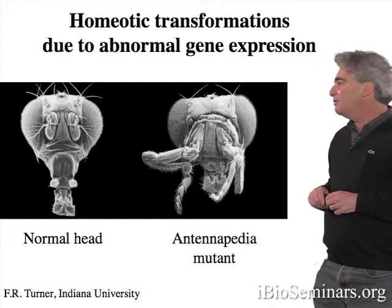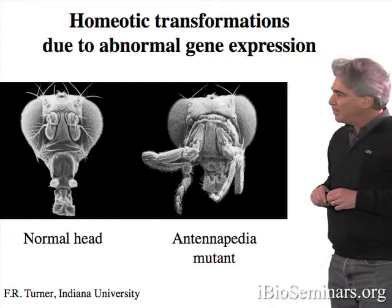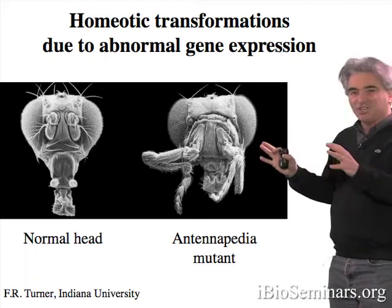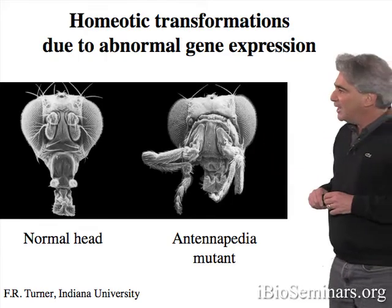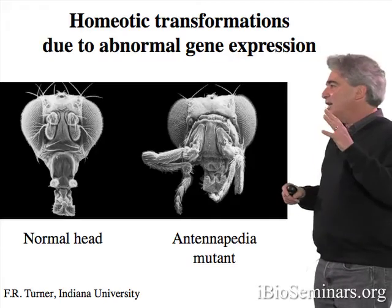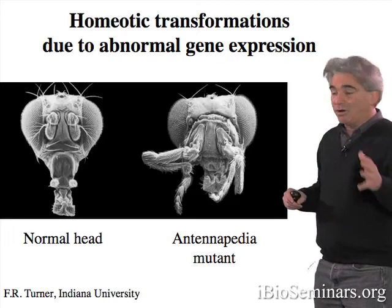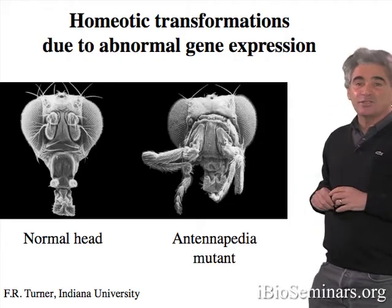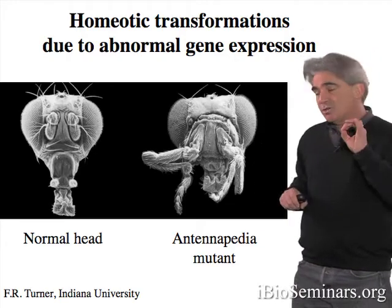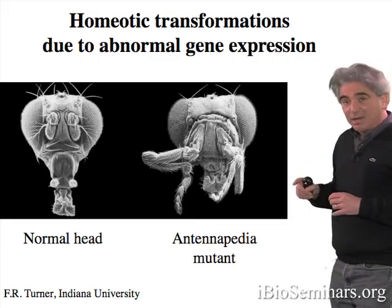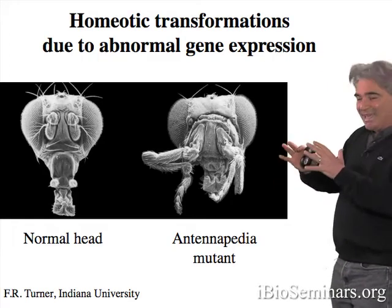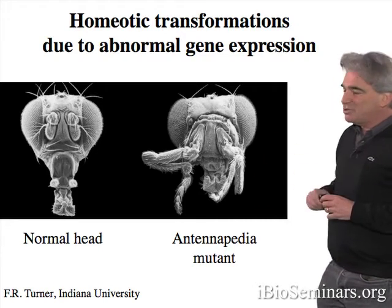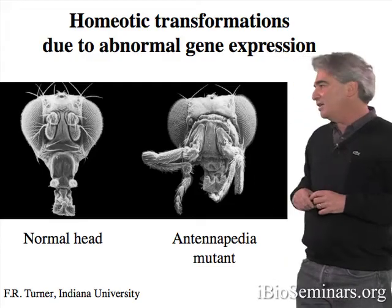On the right is the head of an Antennapedia mutant. And here you see that in place of the normal antennae, there are perfectly sculpted middle legs. This results from the misexpression of the Antennapedia gene in the wrong tissues. Normally, Antennapedia is active in the middle thoracic regions of the developing embryo, where it controls the development of middle legs. But in this Antennapedia mutant, the normal Antennapedia transcription unit is misexpressed in head tissues, and this causes a transformation of antennae into legs.